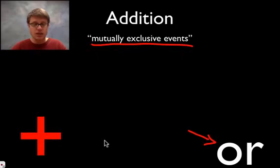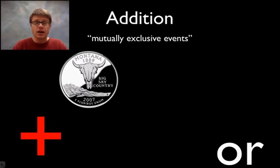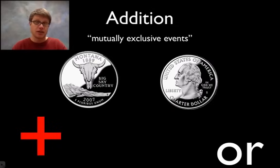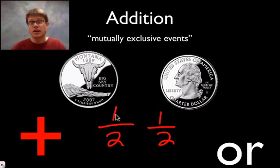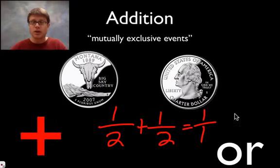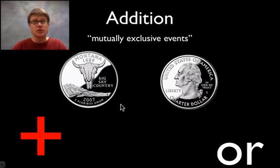Let's say I flip a coin. What are the odds that I'm going to get either a heads or a tails? What are the odds I'll get a heads? It's 1 in 2. What are the odds I'll get a tails? Also 1 in 2. When we ask what are the odds of getting a heads or a tails, we can build it in two different ways, so we simply add those up — 1/2 + 1/2 — and 100% of the time you're either going to get a heads or a tails. That's when we use addition.